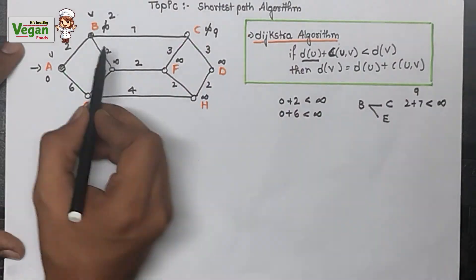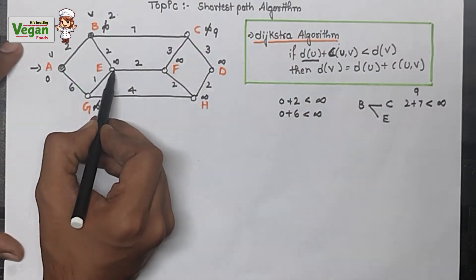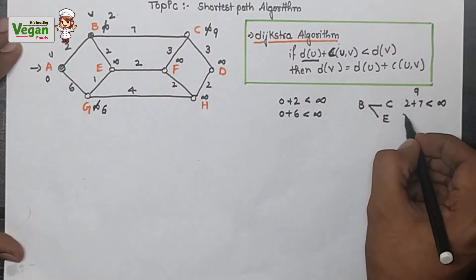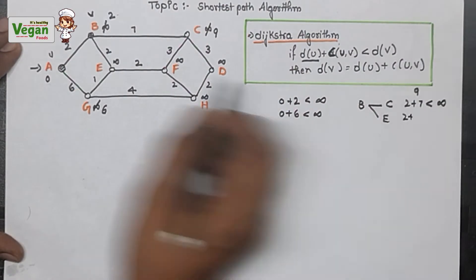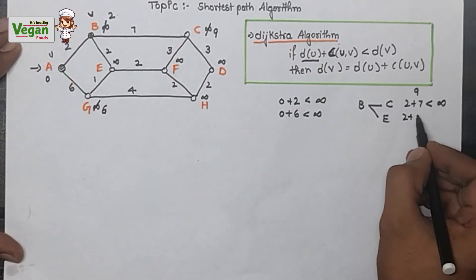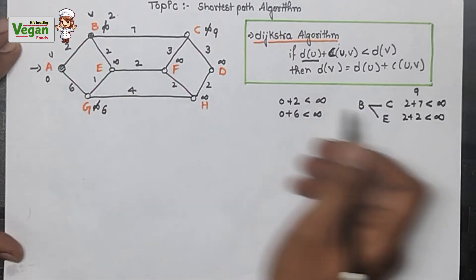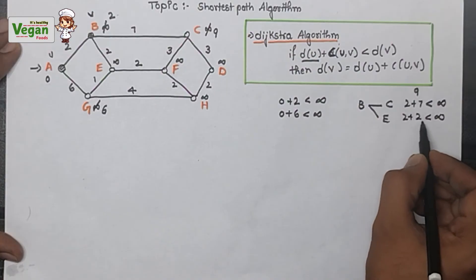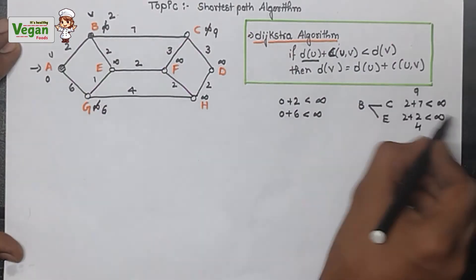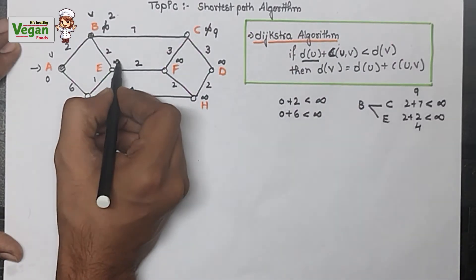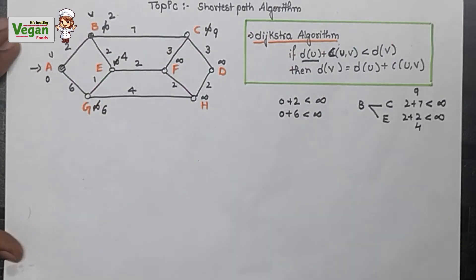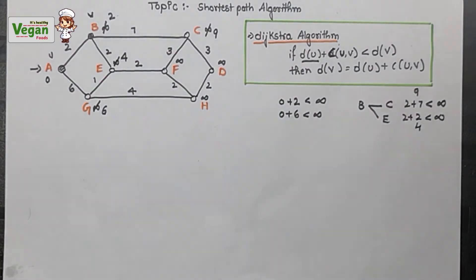From B to E: B cost 2 + edge cost 2 = 4, which is less than infinity, so we strike out infinity and write 4 as E's value. Router B is now done and we cannot revisit B or A.